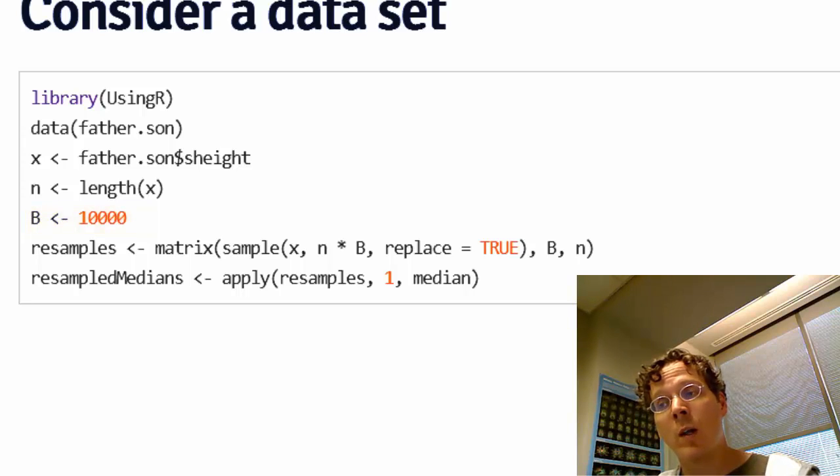So what I'm going to do now is the sample command. When I say sample x, that means draw from x, n times B numbers of resamples, where in every case, because I put replace equals true, every time I take an observation, I take a son's height out of the bag, I put it back in.